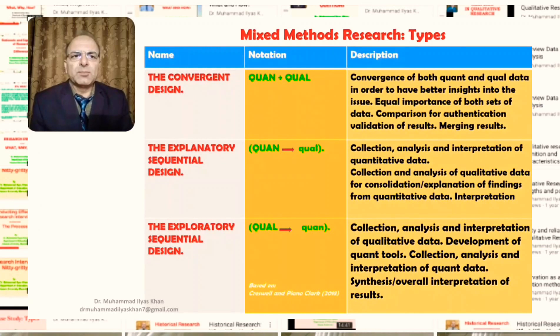In other words, it is more important to explore what we are interested in, that is, our research objectives and questions, rather than the use of a particular research design or method. There is equal importance of both sets of data in the convergent design. And the comparison for authentication or validation of results is one of the features of the convergent design.